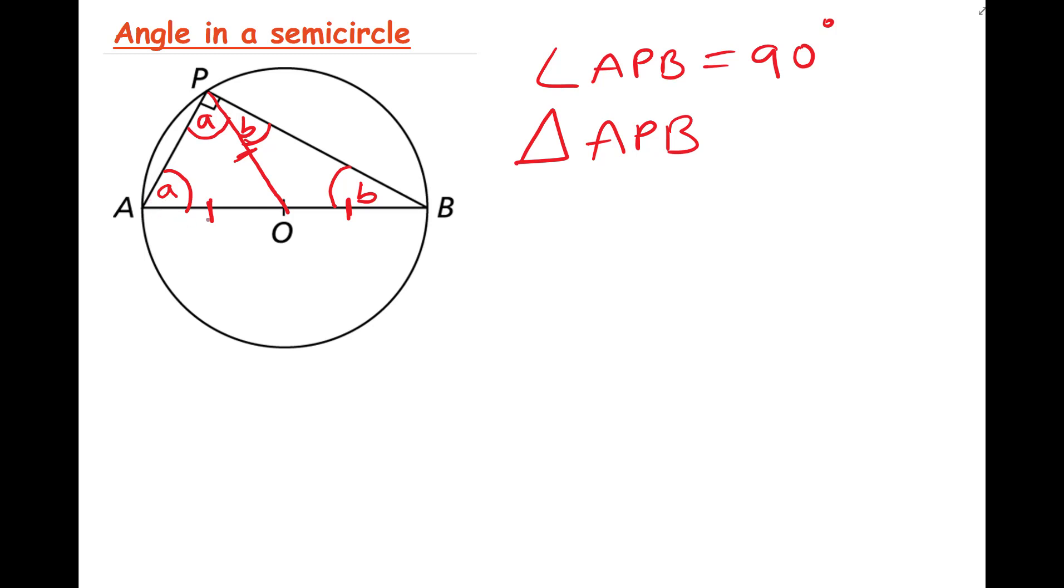So in triangle APB we have angle A, we have angle APB which has two split angles which is A and B, so those two added together—A plus B—and finally we have angle B here. Now all these angles added together, we can say it is equal to 180 degrees.